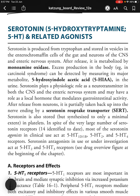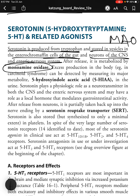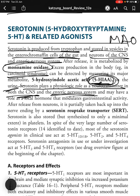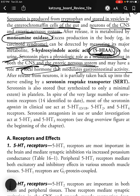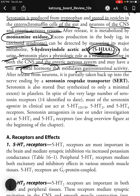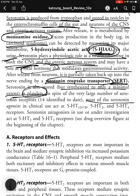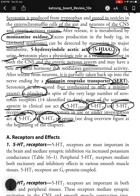Serotonin (5-hydroxytryptamine) is produced from tryptophan and stored in vesicles in the enterochromaffin cells of the gut, neurons of the CNS, and the enteric nervous system. After release, it is metabolized by MAO. Excess production, such as in carcinoid syndrome, can be detected by measuring its major metabolite 5-hydroxyindoleacetic acid (5-HIAA) in the urine. Serotonin plays a physiological role as a neurotransmitter in the CNS and enteric nervous system and may modulate GI activity. After neuronal release, it is partially taken back up by the serotonin reuptake transporter (SERT).